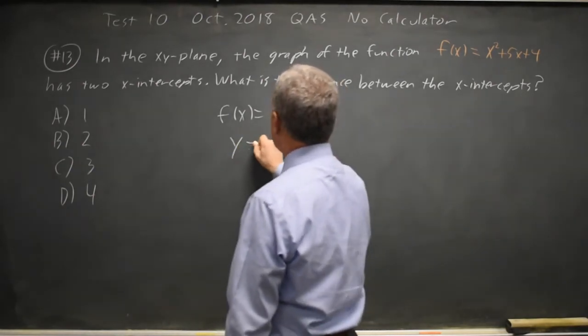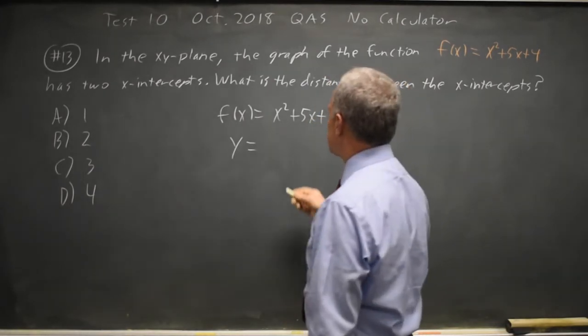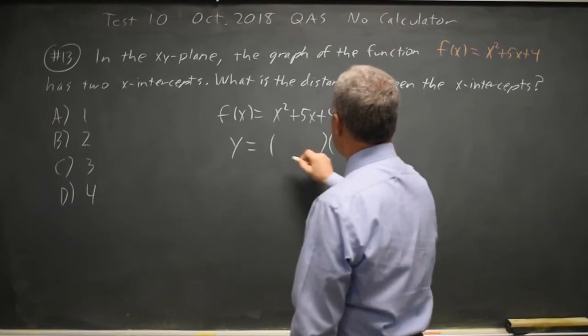I can just write that as y because we're more comfortable with that, although f of x and y mean essentially the same thing. To find the x-intercepts, I'm going to factor.